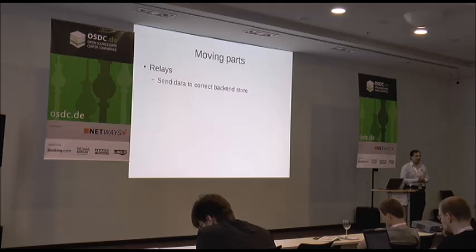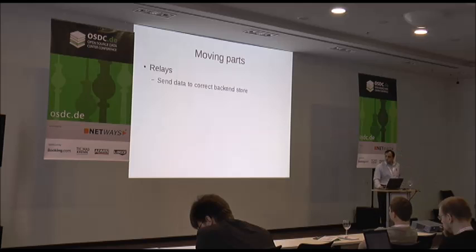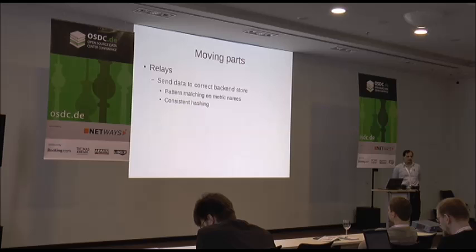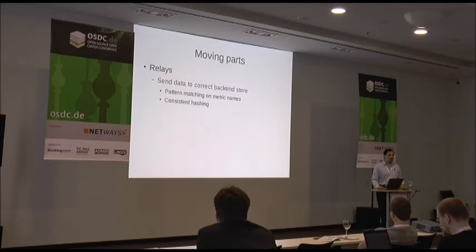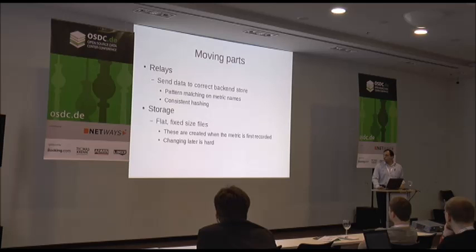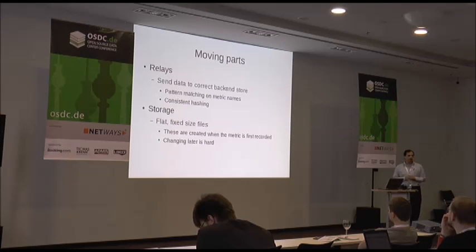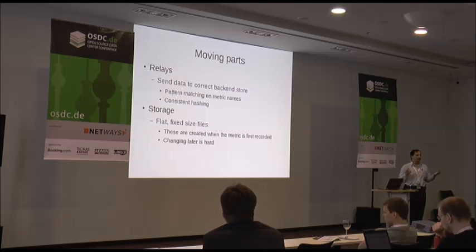Graphite is UNIX-y — it has lots of moving parts. There are relays which push data around. You can do this in one of two ways: pattern matching with a regular expression, or consistent hashing, or both. Consistent hashing scales better, but we also do pattern matching for specific cases. The standard storage backend is fixed-size flat files called whisper, which is supposed to be replaced by Ceres. It doesn't scale very well once you reach a few hundred thousand metrics, mostly because hardware tends to melt down.